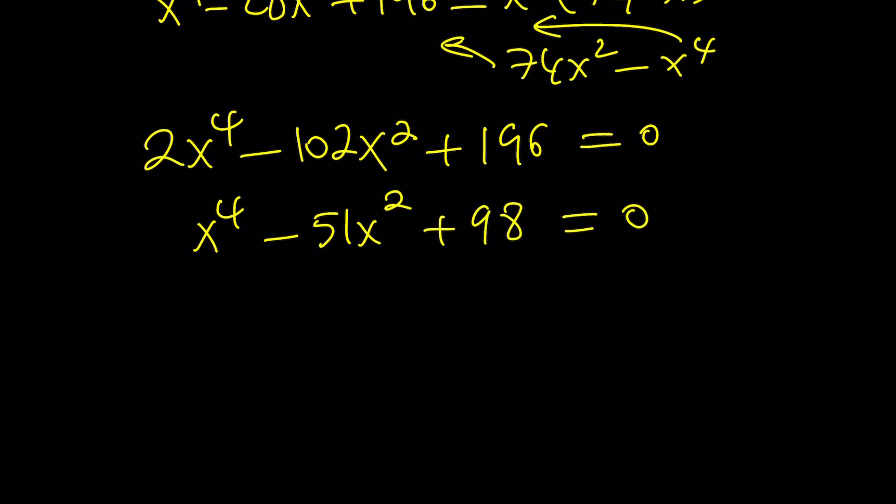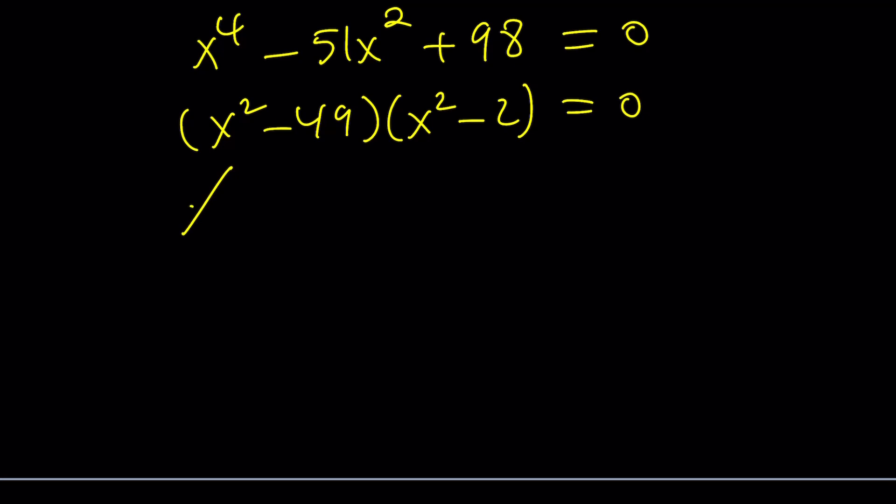You might be thinking, is this factorable or can I use the quadratic formula? First of all, this is a quartic, but it's also a bi-quadratic, which means we can actually find two numbers whose product is 98 and whose sum is negative 51. And those numbers happen to be negative 49 and negative 2. So I can factor this expression as follows. And from here we get the solutions: x equals 7 and x equals negative 7.